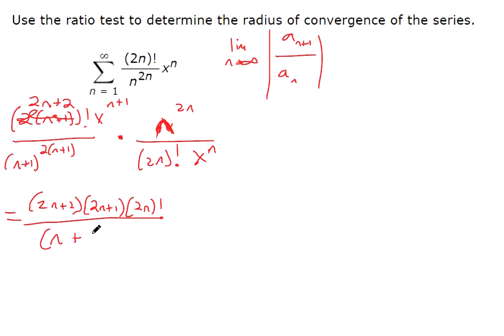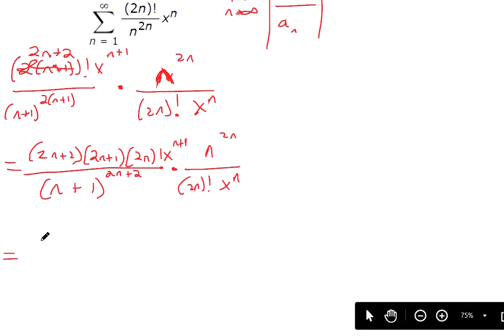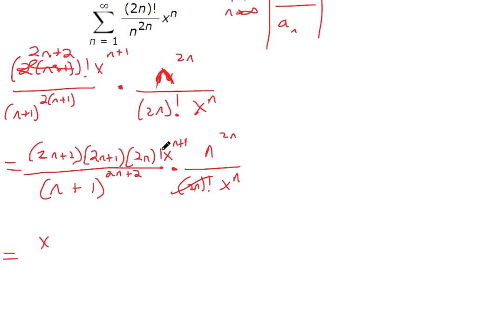We've got n+1, and then if we distribute that, 2n+2. We're multiplying this by n to the 2n power. And then this is 2n factorial. I dropped my x to the n+1 because I have x to the nth here. So x to the n+1 divided by x to the n, those powers can subtract to give us just x to the first power.